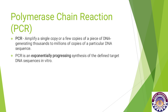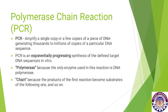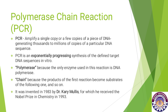Exponentially progressing means that if you have one copy as a product, it becomes a reactant in the next reaction, so thousands of copies can be made. The name PCR stands for Polymerase — the enzyme DNA polymerase — and Chain, because products of one reaction become reactants in the next. PCR was invented by Dr. Kary Mullis, for which he received the Nobel Prize in Chemistry in 1993.